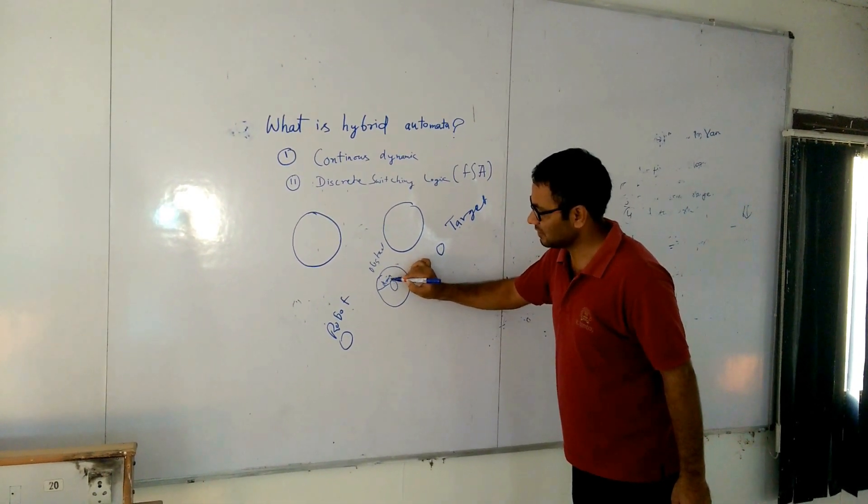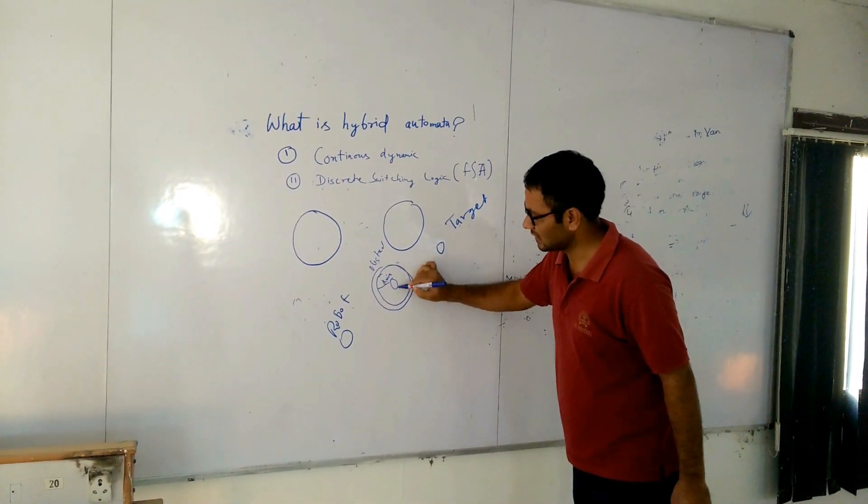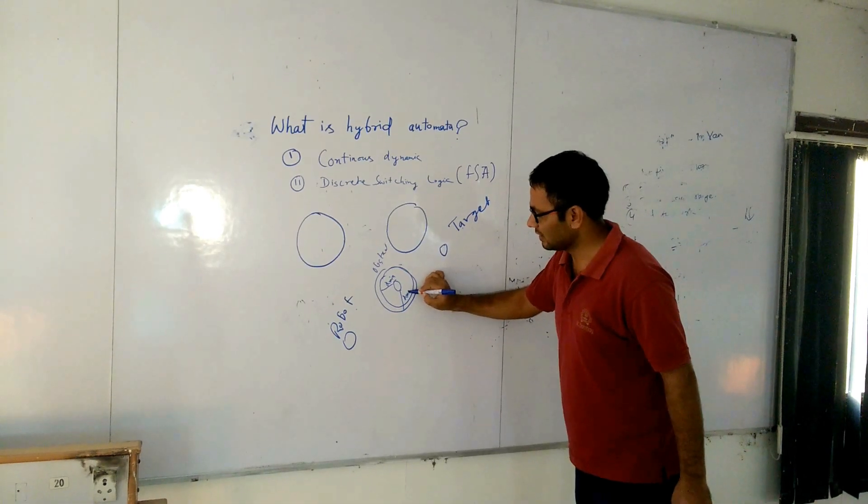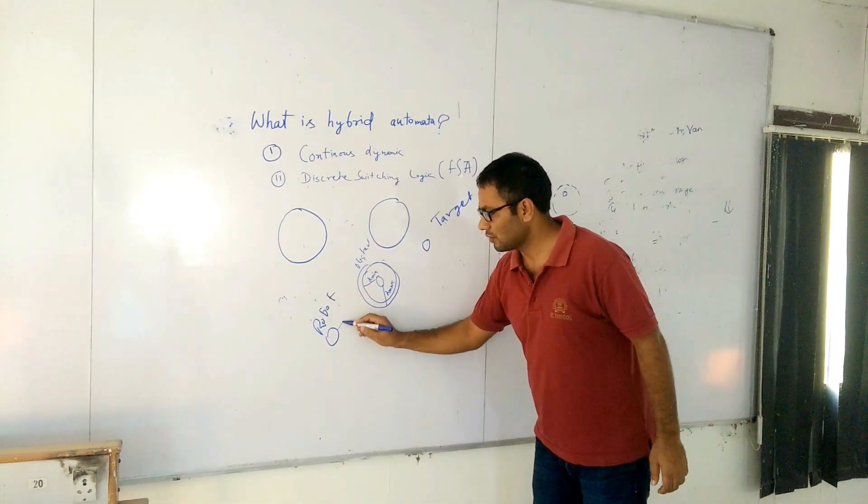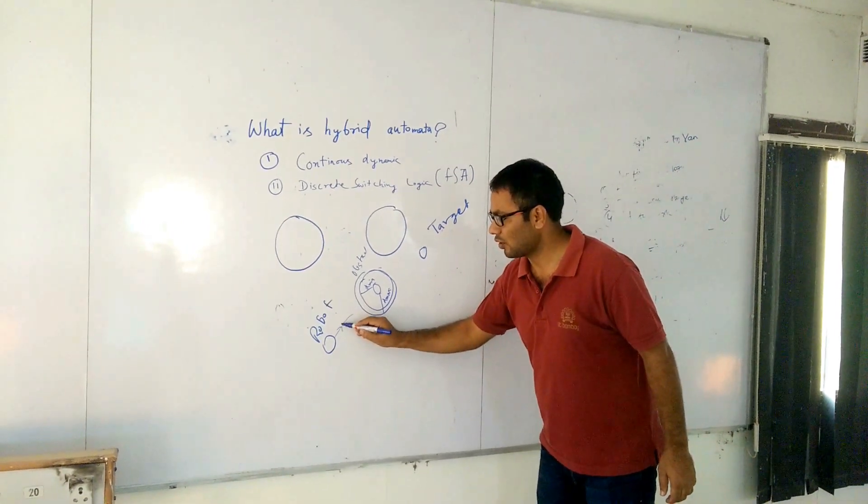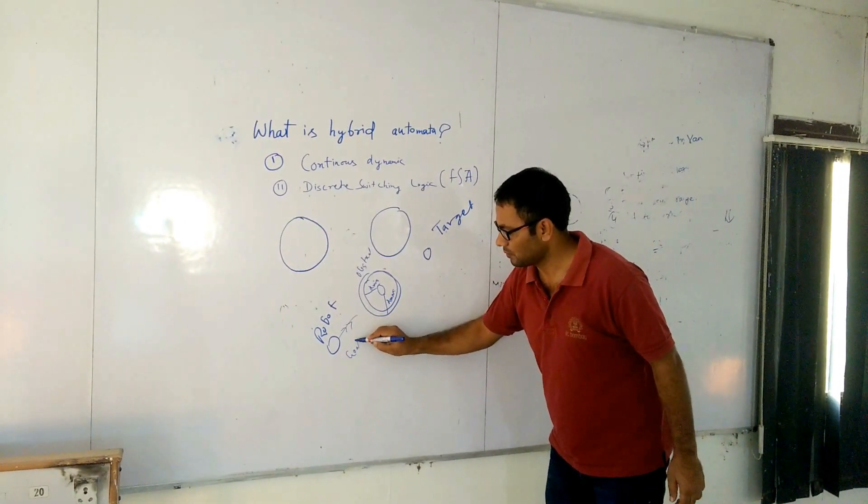One is D minimum, which is the minimum distance, and D maximum is the maximum distance where the obstacle is. So the robot, once it is moving, will move like this. This is what we call goal-to-goal behavior.